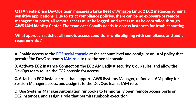We'll look at our first option. This is: enable access to EC2 serial console at the account level and configure a policy that permits the DevOps team's IAM role to use the serial console. EC2 serial console access is account-wide and doesn't integrate with IAM, Identity Center authorization, or offer full audit tracking. It's incorrect.